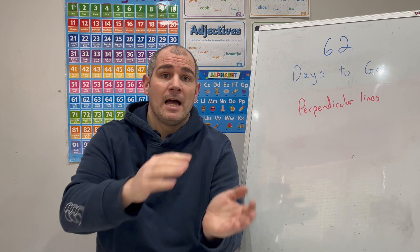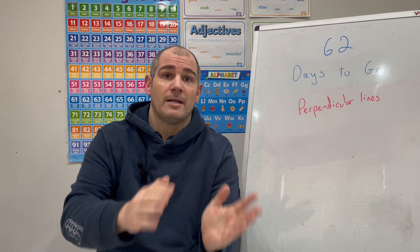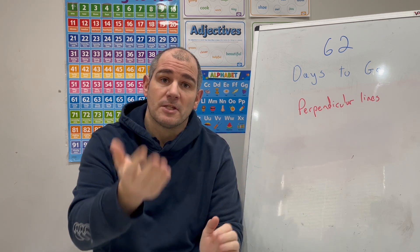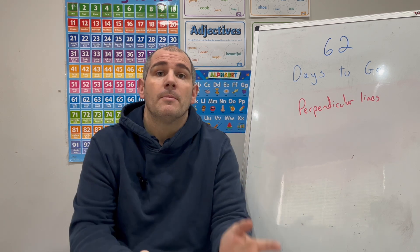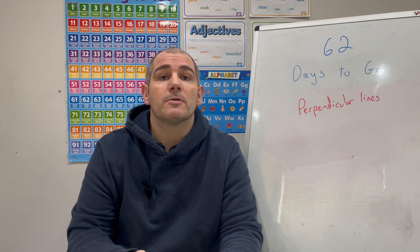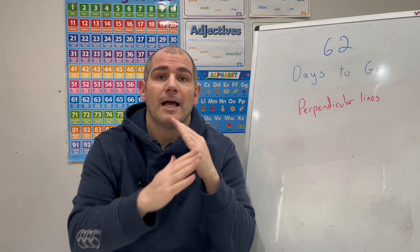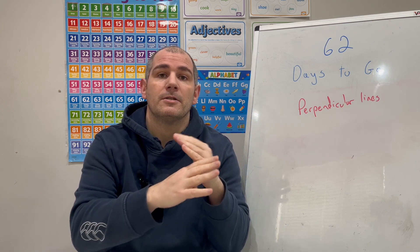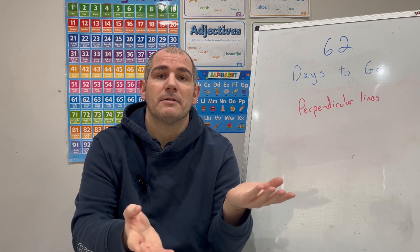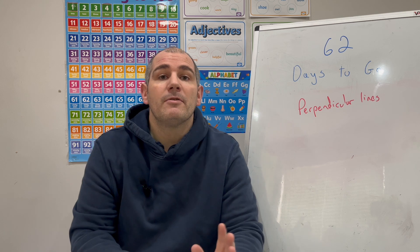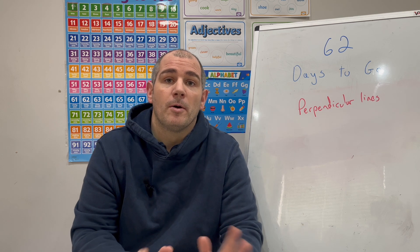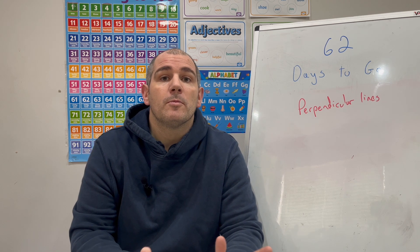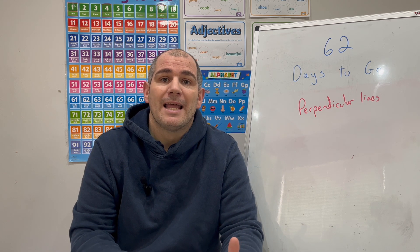We've looked previously at the equations of lines that are parallel to each other — the fact that they've got the same gradient. But today we're going to be focusing on perpendicular lines, lines that cross each other at 90 degrees, that are right angles to each other. And whenever you get two lines that are perpendicular to each other, the gradients will multiply together to be negative 1.